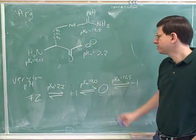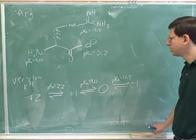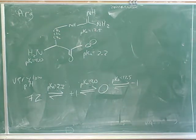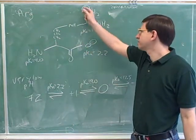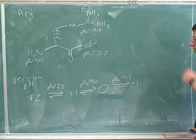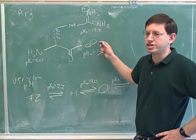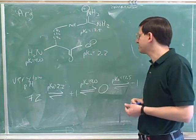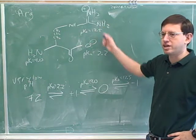Let's go back and think about the zero net charge form. How did we get that zero net charge? Who was protonated and who was deprotonated? After the pKa of 9, that group is deprotonated, and the group with pKa 12.5 was still protonated. That gives us plus 1 and minus 1, which is 0. This is interesting because even though the net charge is zero, there are still individual charges — two charges that cancel each other out. This situation, where two charges cancel to give a net charge of zero, is called the Zwitterion.